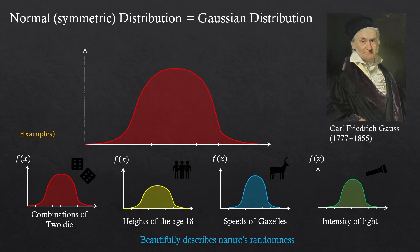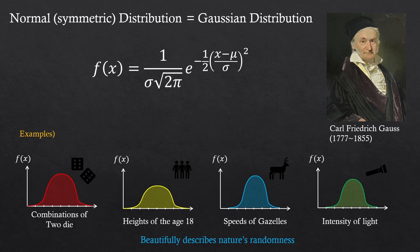Normal distribution is also known as Gaussian distribution. Why? Because this crazily smart man 200 years ago, Carl Gauss, came up with a mathematical expression which can describe all kinds of normal distribution.